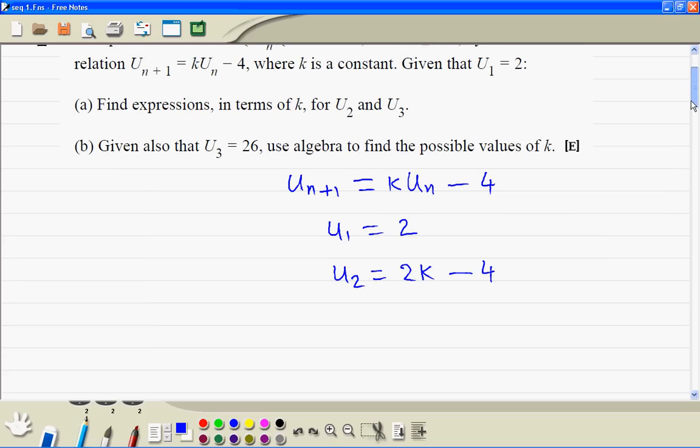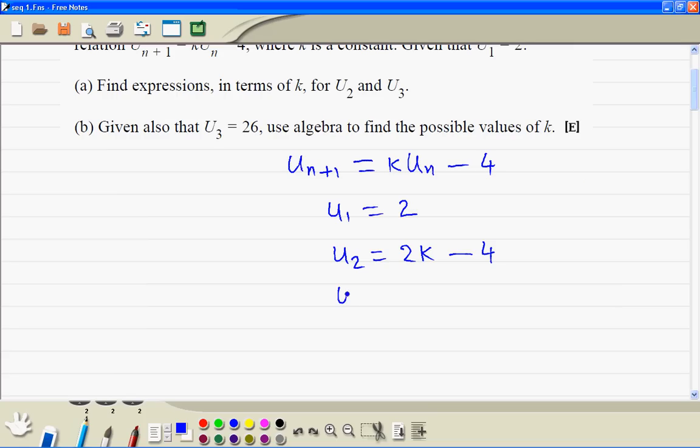The third term is k times the second term. So k times 2k minus 4, then we subtract 4. So this we can write as 2k squared minus 4k minus 4.